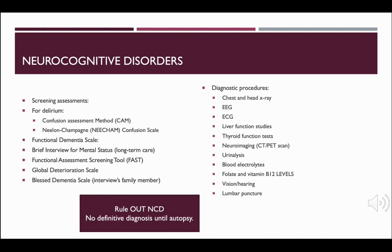There are many screening tools for assessing neurocognitive disorder. For delirium, you can use the Confusion Assessment Method (CAM) or the Nylon-Champagne Confusion Scale. There is also a Functional Dementia Scale that assesses an individual's ability to perform self-care, extent of memory loss, mood changes, and whether the individual is a danger to themselves or others. The Mini Mental Status Exam is often used inpatient, and for long-term settings, the Brief Interview for Mental Status (BIMS) is used.